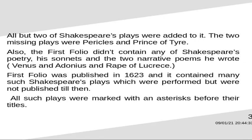The First Folio was published in 1623, and it contained many of Shakespeare's plays which were performed but were not published till then. All such plays which were not published till then were marked with an asterisk before their titles.